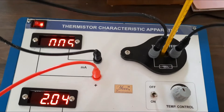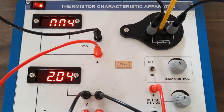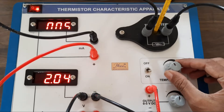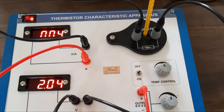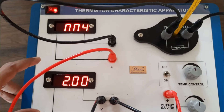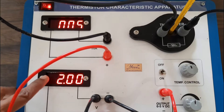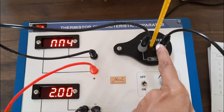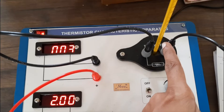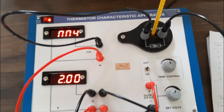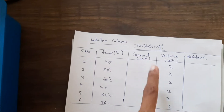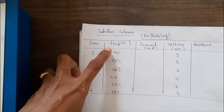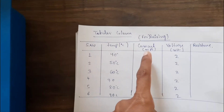As the temperature increases, the current also changes. We are going to increase the temperature. The voltage remains constant, so note down the temperature and the corresponding current as the temperature rises. We need two tabular columns — one for rising temperature and one for lowering temperature. As the temperature increases, note down the current in the rising temperature column.